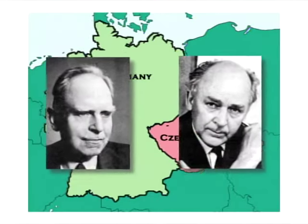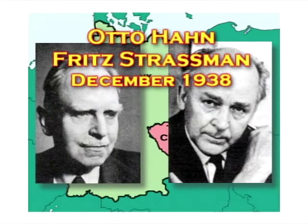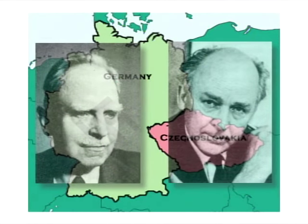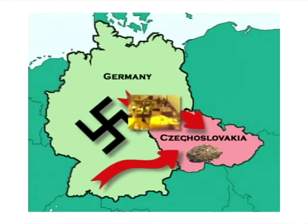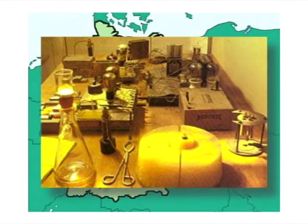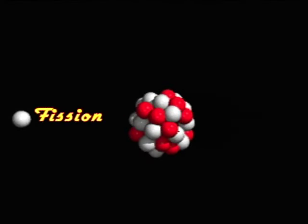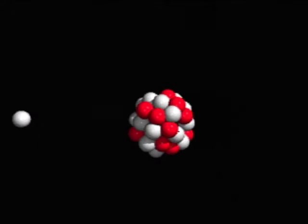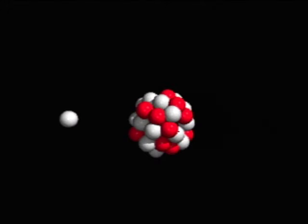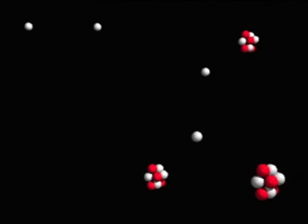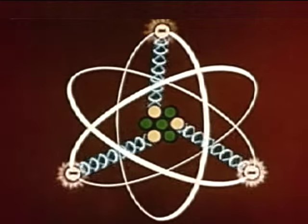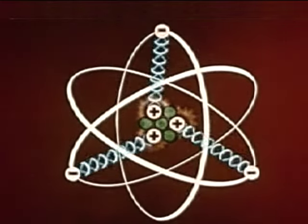German scientists Otto Hahn and Fritz Strassmann took nuclear fission from concept to reality in December of 1938, supporting the efforts of the Nazi regime. Germany had taken control of Czechoslovakia and its rich supply of radioactive uranium ores, placing itself in a good position to develop an atomic bomb. Fission is the process of crashing a neutron into certain radioactive elements called isotopes, causing the atom to break apart with a quick release of energy. The collision also releases more neutrons that crash into more atoms, creating a chain reaction. Scientists quickly learned that fission could create a great deal of very destructive energy.